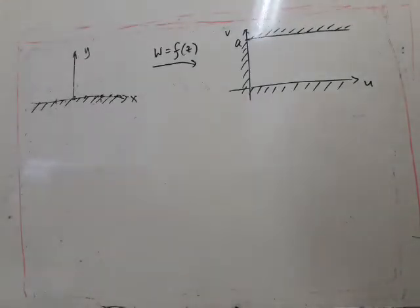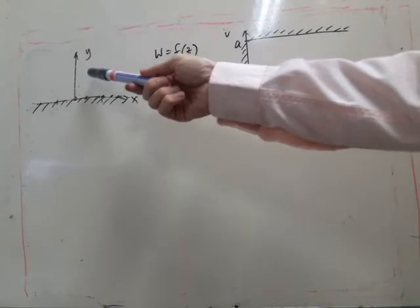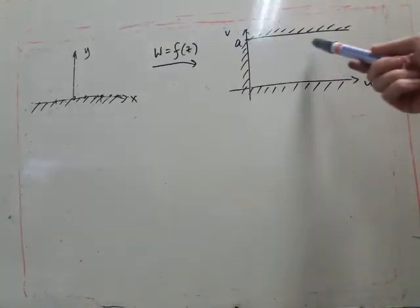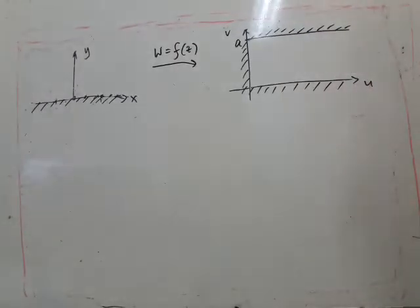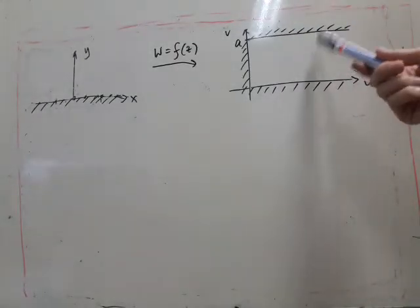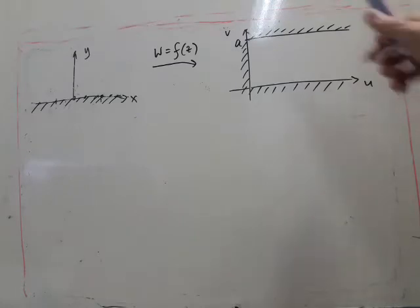In this example we want to find a transformation from the upper half z-plane to this half infinite strip in the w-plane. Now you might remember that we've actually seen this sort of transformation, or at least we've seen it from here to here before.